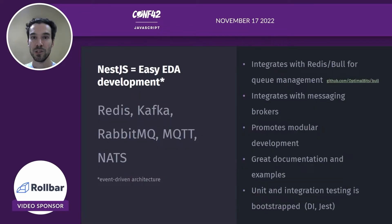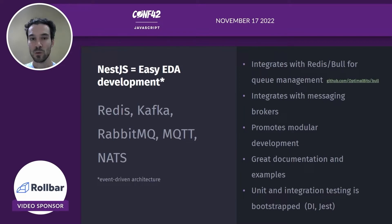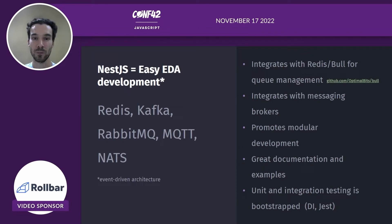Let's think about why NestJS simplifies event-driven development. First, it allows really fast and simple integration of the popular Bull package for queues. For microservices development and communication, it has integrations with the most popular messaging brokers like Redis, Kafka, RabbitMQ, MQTT, NATS, and so on. Third, it promotes modular development, so it's naturally easy for you to extract single units of work later in the project's life cycle, even if you start your project as a monolith. The next point is it has great documentation and examples, which is always nice to have. You can be running your first distributed app in minutes with NestJS.